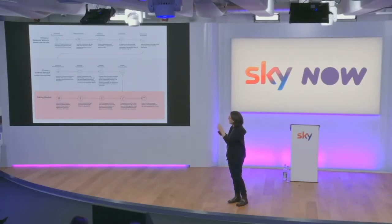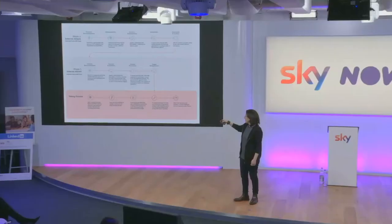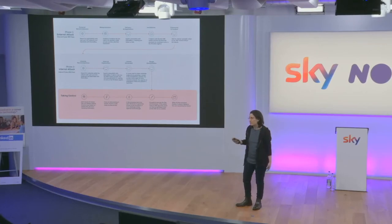The group was called Shadow Brokers and they stole tools that the NSA had developed. They exploited a vulnerability on Windows through port 445 to get remote code execution. Once inside the machine, they started killing processes, encrypted the data, and displayed the ransomware message.